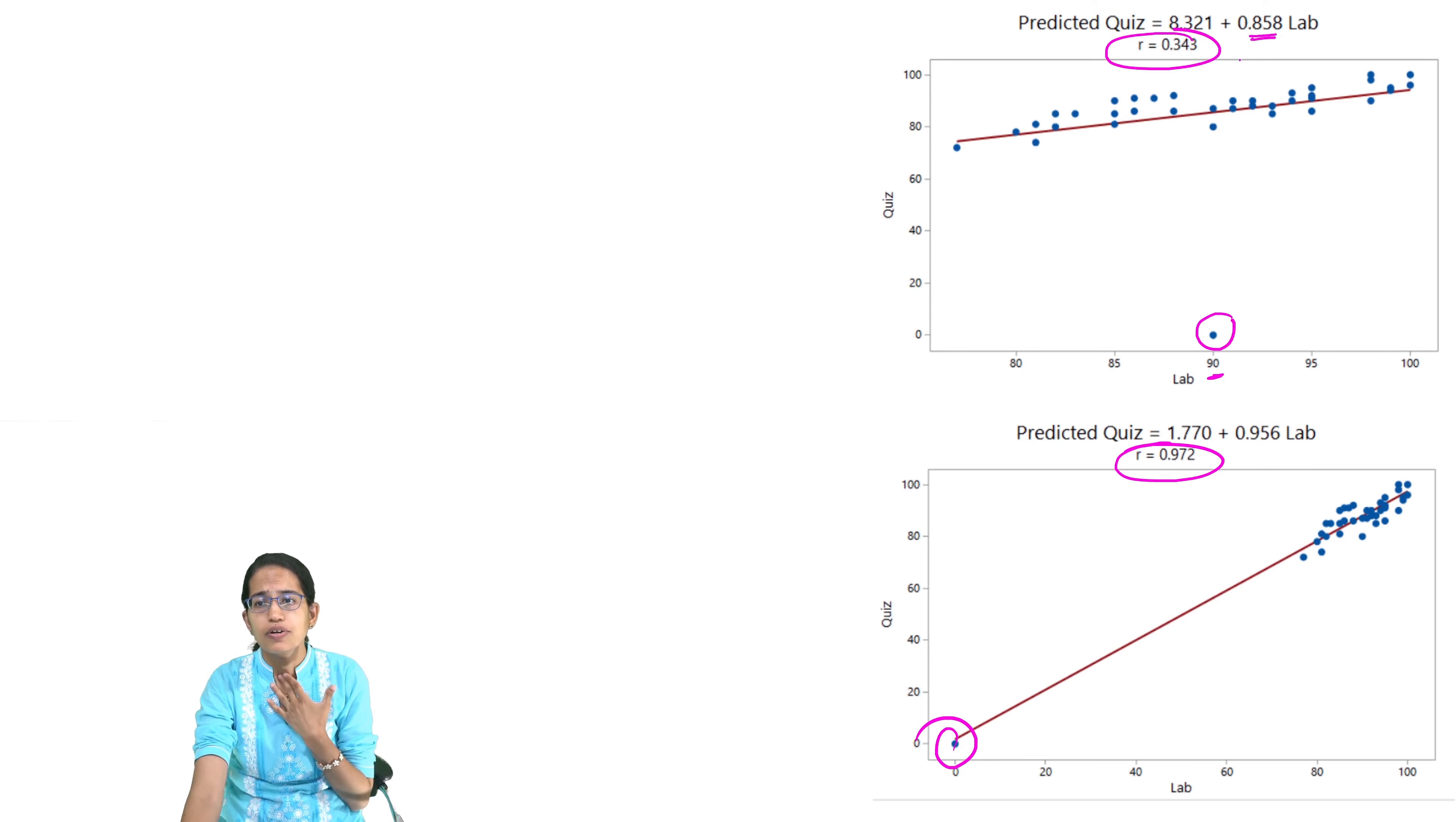Initially my slope value was 0.8, but now it's 0.85. There has been a significant change in the slope value because my r value changes. Any outlier can reduce the correlation value or increase the correlation value depending on the location of the outlier.